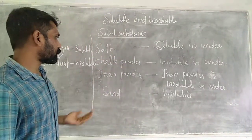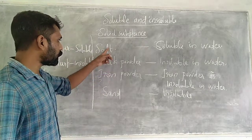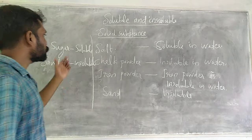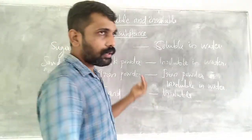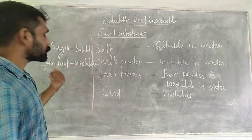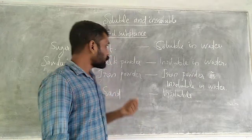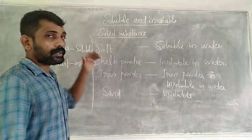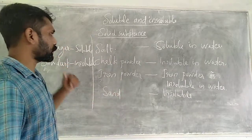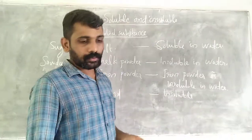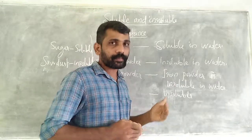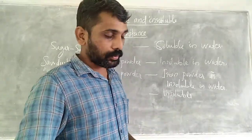These substances can be classified into soluble and insoluble. Salt and sugar are soluble. Others — chalk powder, iron powder, sand, and sodas — are insoluble. So these substances can be classified on the basis of solubility: soluble or insoluble.